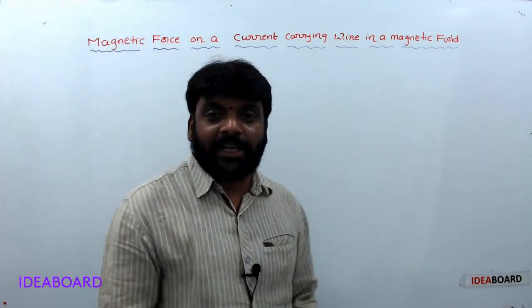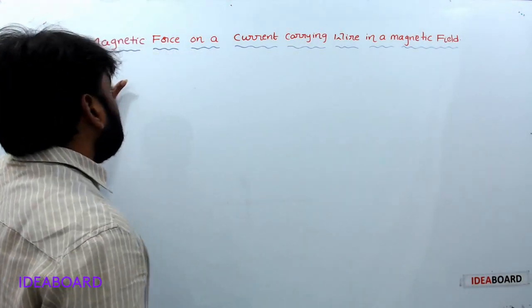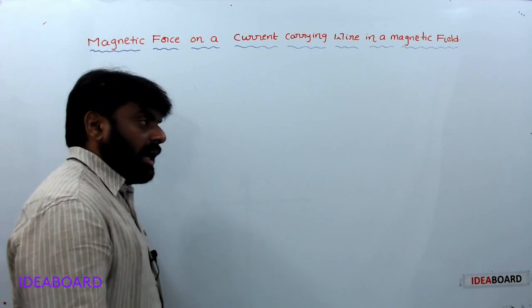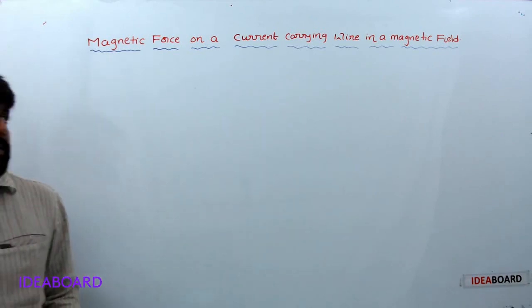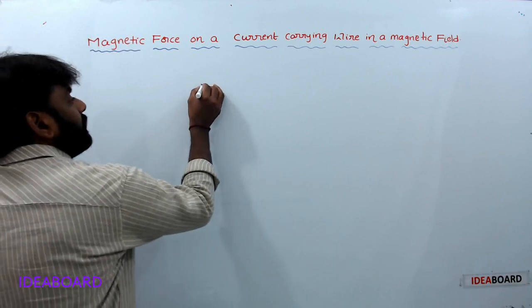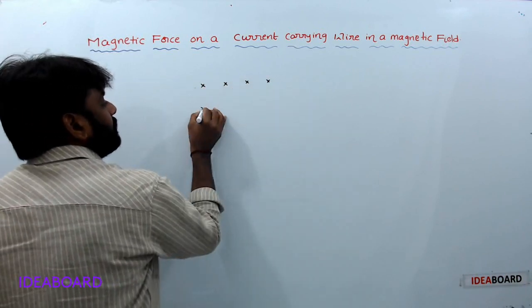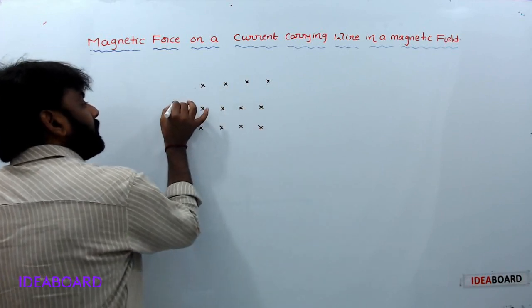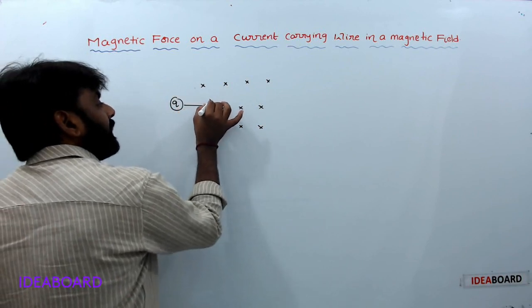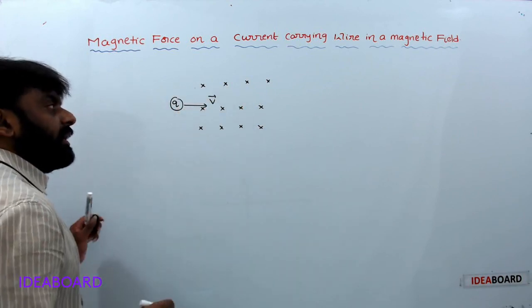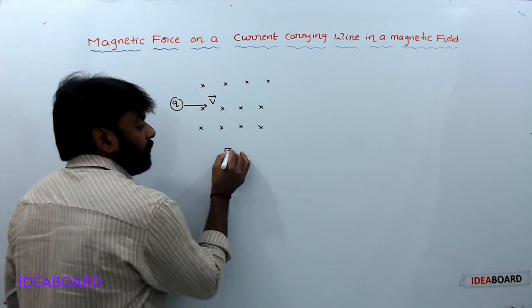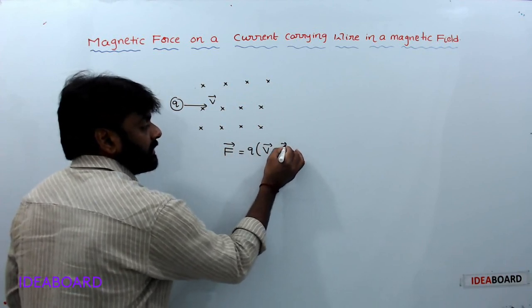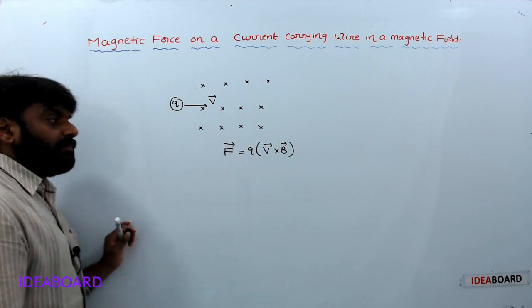Hi students, today our topic is magnetic force on a current-carrying wire in a magnetic field. You know already, if a charged particle is moving in a magnetic field, the force acting on that charged particle is F = Q into V cross B.